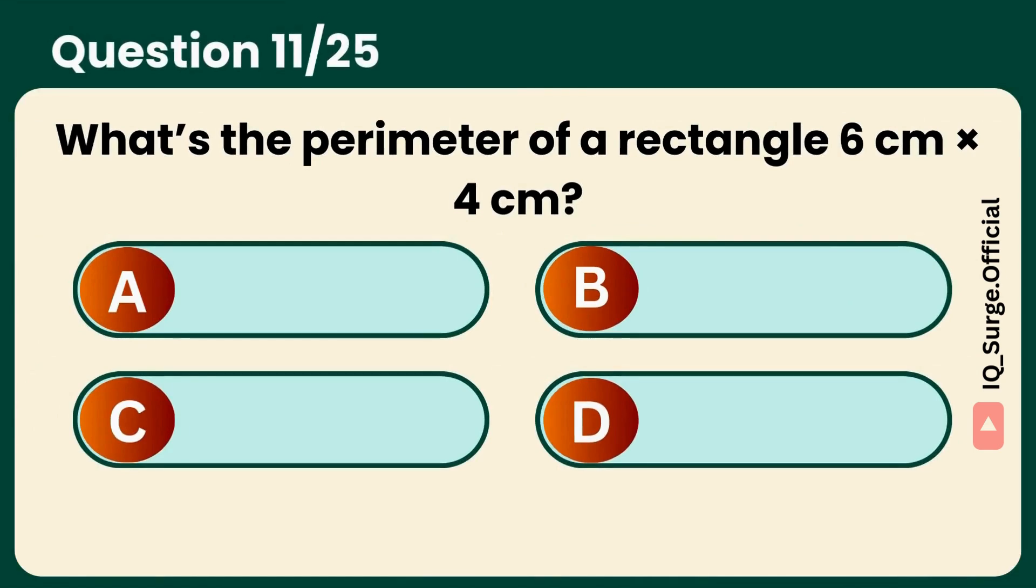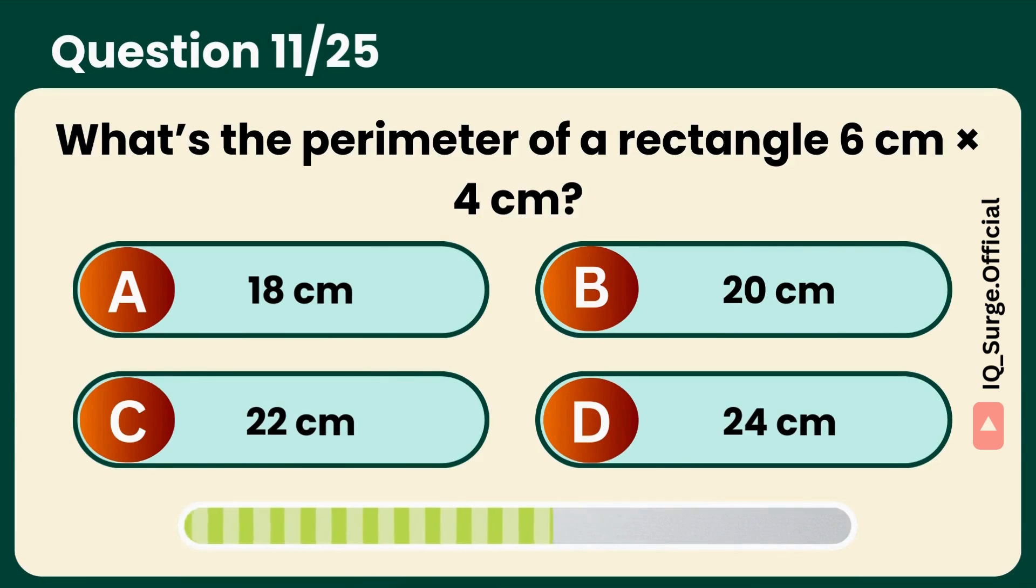What's the perimeter of a rectangle 6 centimeters by 4 centimeters? Answer: 20 centimeters. Perimeter or area? Don't mix them up.